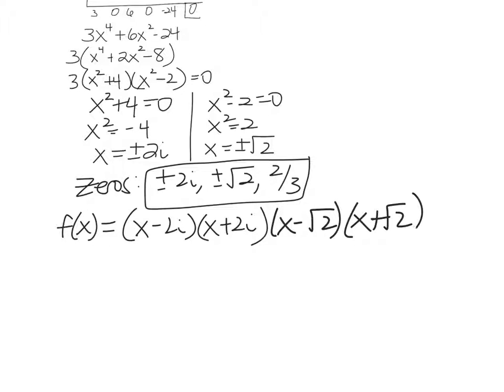And then this part's a little tricky because it's really not x minus two-thirds. It's really what? Yeah, it's really 3x minus 2. Because if you do 3x minus 2 equals 0, you will get two-thirds as your zero. And so you have to write it like that, not in fractions.